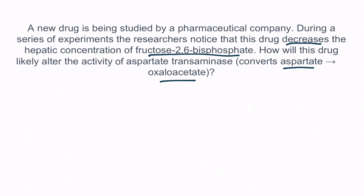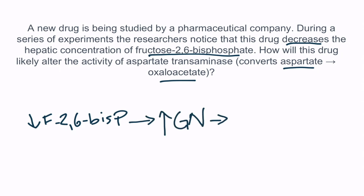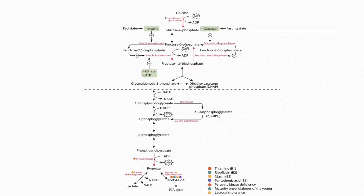Aspartate transaminase is an enzyme that breaks down the amino acid aspartate into oxaloacetate, which can then be utilized to make glucose. So this drug decreases the hepatic concentration of fructose-2,6-bisphosphate, which results in increased gluconeogenesis, which results in increased activity of aspartate transaminase. From our metabolic pathway, we can see that decreased fructose-2,6-bisphosphate releases the inhibition on fructose-1,6-bisphosphatase, increasing its activity and resulting in increased production of glucose — in other words, increased gluconeogenesis.